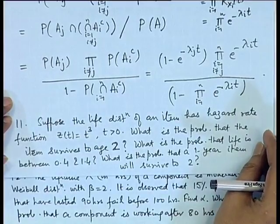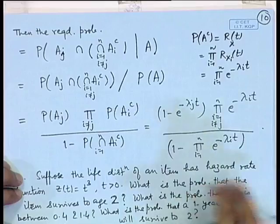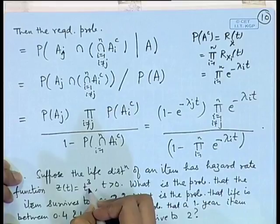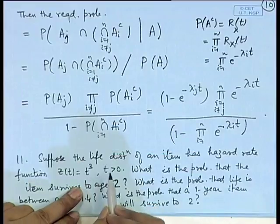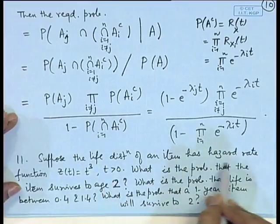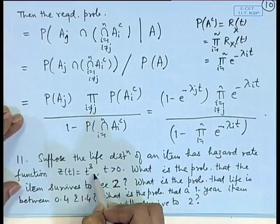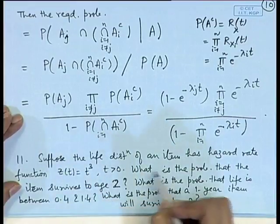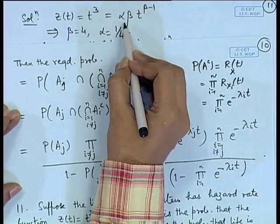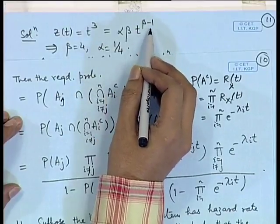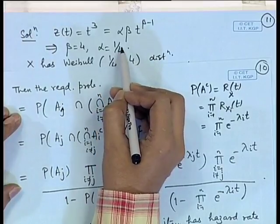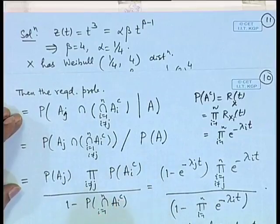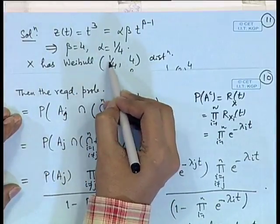Let us look at applications of the Weibull distribution. Suppose the life of an item has a hazard rate function z(t) = t^q. Recalling that a hazard rate of the form α·β·t^{β-1} corresponds to a Weibull distribution with parameters α and β, we compare and find α = 1/4 and β = 4. Thus the life of the item has a Weibull distribution with α = 1/4 and β = 4.